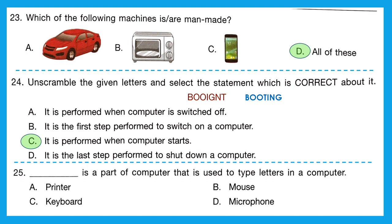Question 25: dash is a part of a computer used to type letters. Do we type letters with a printer? No. With a mouse? No. With a keyboard? Yes. With a microphone? No. Our correct option is C, keyboard. Keyboard is the part of a computer used to type letters.